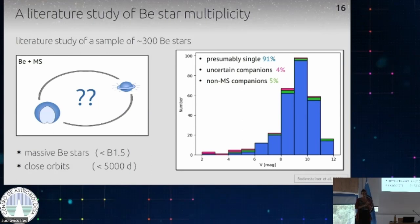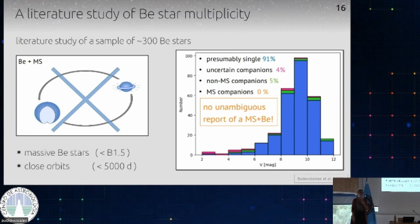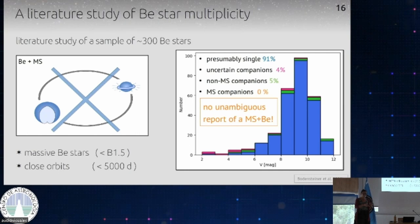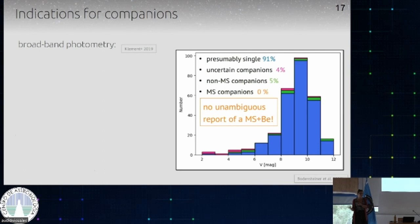Here's what we found: roughly 90% we call 'presumably single' — stars for which there's no mention of any binarity indication in the literature, meaning they're either truly single or haven't been observed enough to detect a companion. Then 4% had companions detected but with unclear nature. And there is 5% of stars that have non-main sequence companions — compact objects or stripped stars. Interestingly, there was not a single unambiguous report of a main sequence plus BE star system — in contrast to B-type stars — which gives another indication that the binary channel is important.